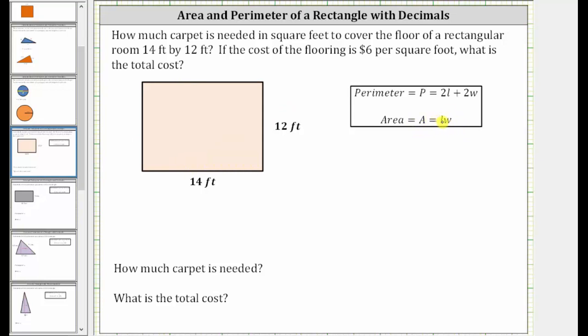For a rectangle, L is the longer side and W is the shorter side. So for this room, the length L is 14 feet and the width W is 12 feet.